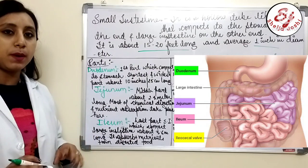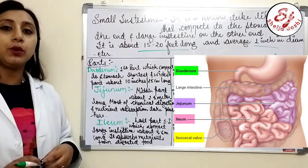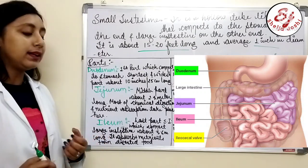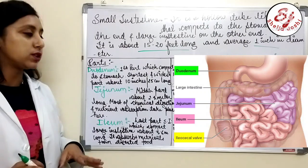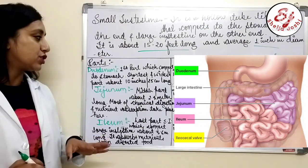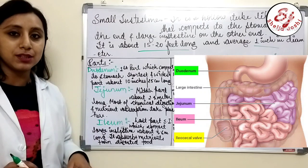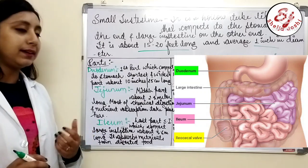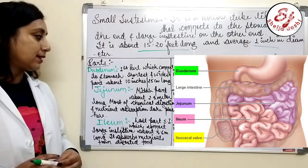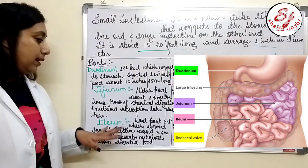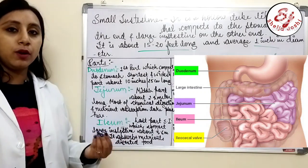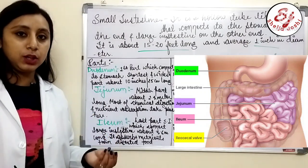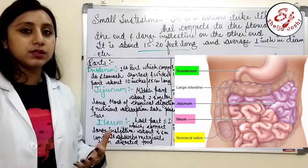The duodenum is the first part of the small intestine, connecting to the stomach. It is the shortest and widest part, around 25 cm or 10 inches long. The jejunum is the middle part, connecting the duodenum and ileum, and is about 2.4 meters long. The ileum is the last part of the small intestine, connecting to the large intestine. It is around 3.6 meters long and absorbs many nutrients from digested food.